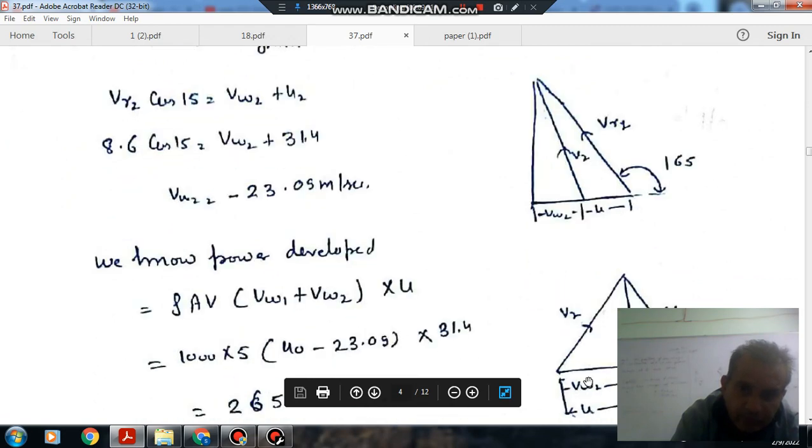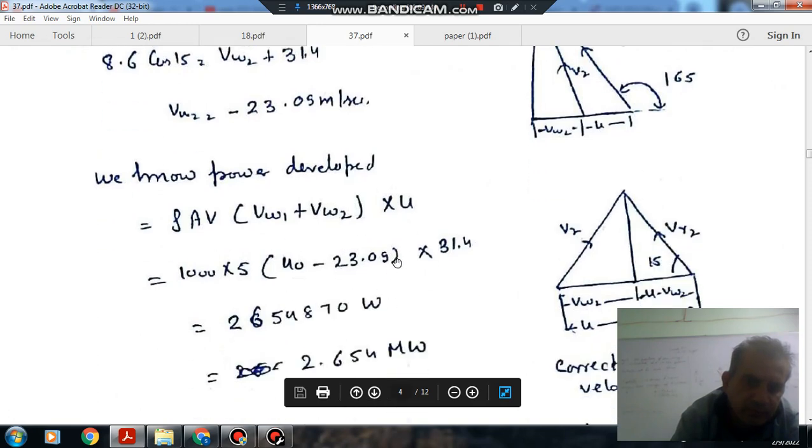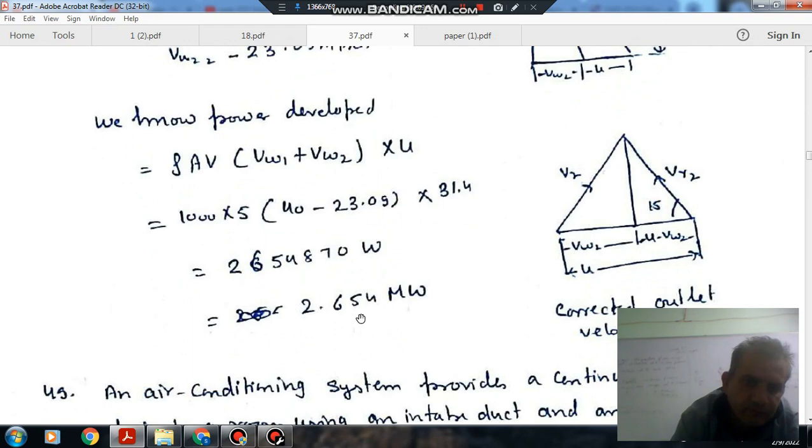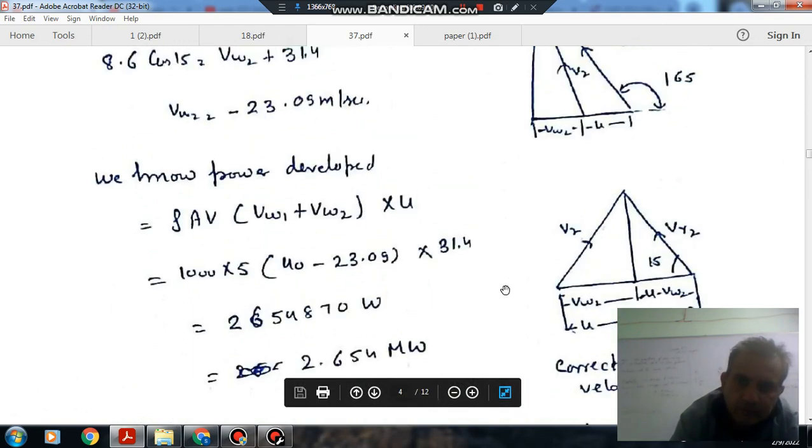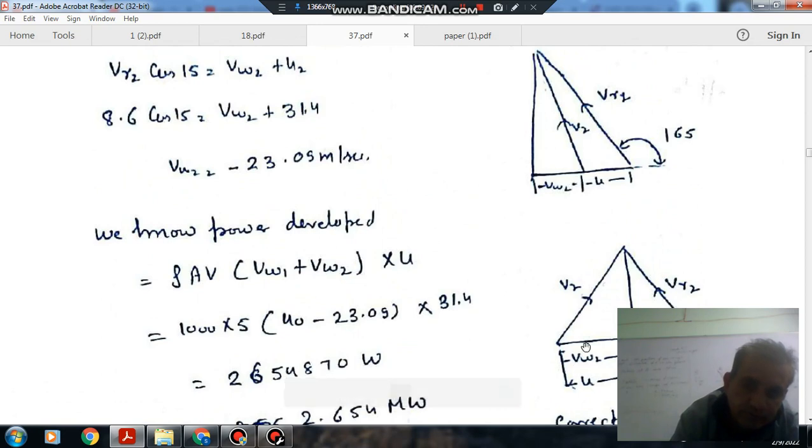The power developed is given by ρAV(Vw1 + Vw2)U. Vw1 is there, Vw2 is there, U is there. So you can find the power developed is 32.654 megawatt. This is the correct answer.